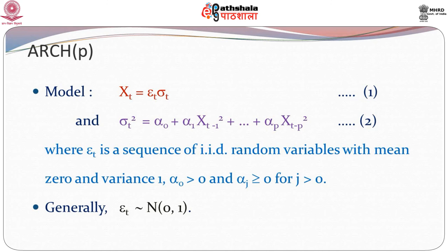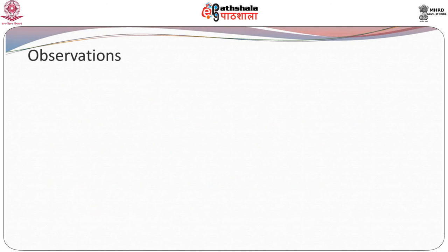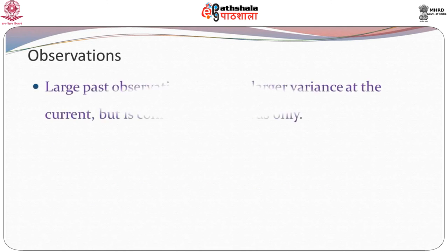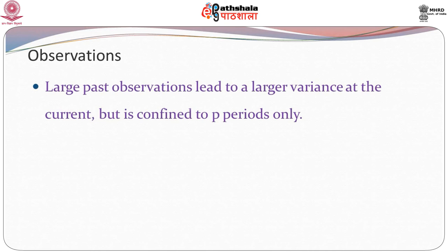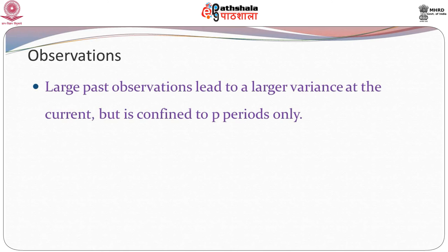Generally, we assume that epsilon_t is Normal(0,1), but we will see that we can change this assumption as well. Some observations: firstly, if you have large past observations, this leads to a larger variance at the current point, but is not confined to p periods only. The current variance of x_t would be large because sigma_t squared depends on x_{t-1}, x_{t-2}, and so on. Hence, large values in the past would make sigma_t squared large.